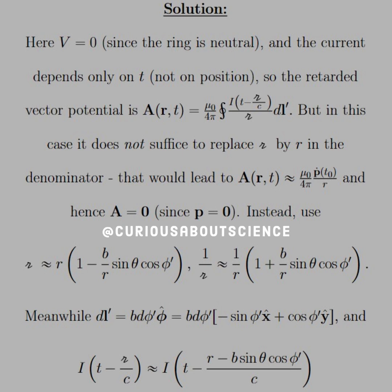So, V is equal to zero since the ring is neutral in this magnetic dipole, and the current depends only on t, not its position. So the retarded vector potential A(r,t) is equal to mu naught over 4 pi, closed integral, I evaluated at the retarded time, which is t minus script R over c, over script R, DL prime. But in this case, it does not suffice to replace script R by r in the denominator. That would lead to A(r,t) approximately equal to mu naught over 4 pi, P dot evaluated at t naught over r, and hence A equals zero since P equals zero. Again, neutral because everything is adding up plus or minus evenly.